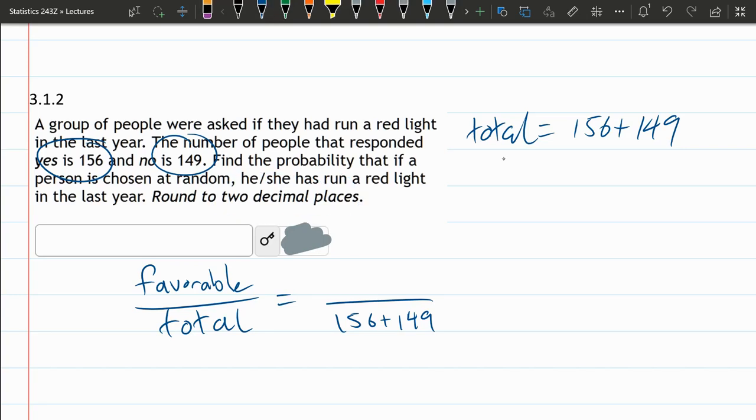But we need to find the numerator, the probability, if a person is chosen at random, that he or she has run a red light. So I believe that would be a yes.